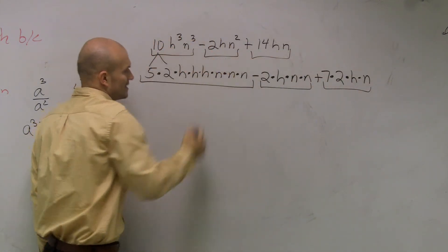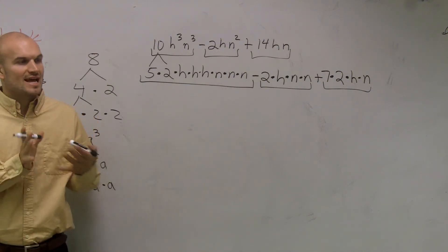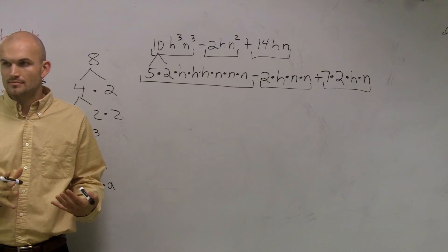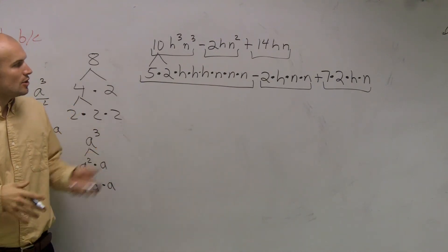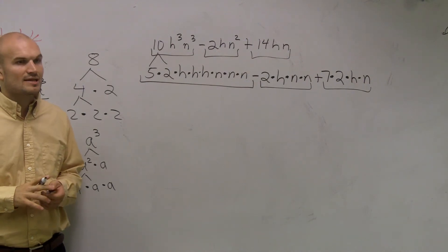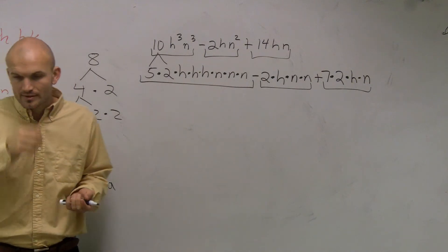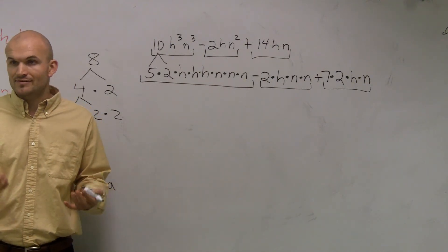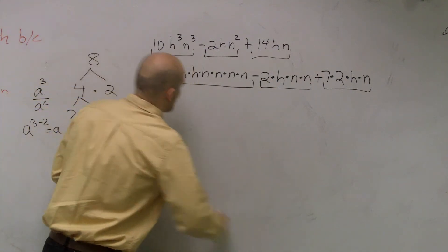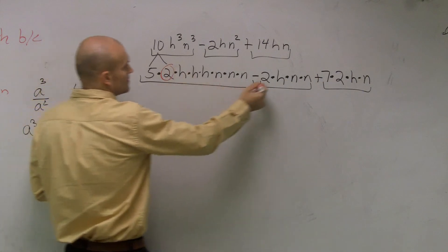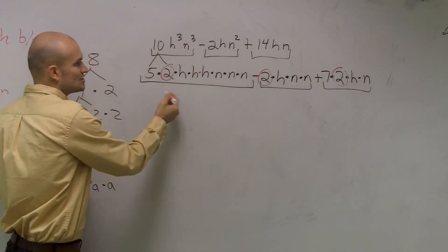So when I say factoring, what I mean is take out everything that they have in common. So what we're going to do is we're going to divide out what everything they have in common. So let's first take out the numbers. What number do they have in common? 2, right? So, I'm sorry. Take out the largest amount that they have in common. So the largest number that they have in common is a 2. So I'm going to factor out a 2.